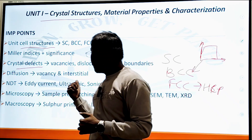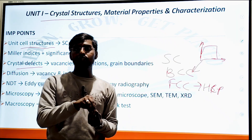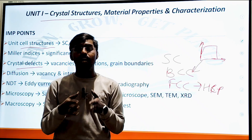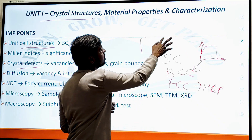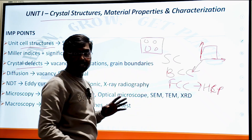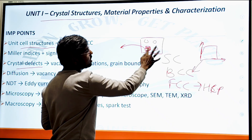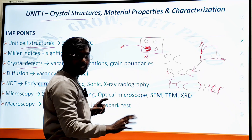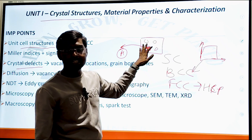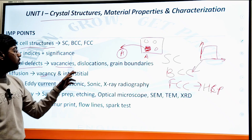The third topic is crystal defects. These include vacancies, dislocation, and grain boundary. Vacancies can be understood by analogy: if a student leaves a classroom, a vacancy is created in that seat. Similarly, in a material's crystal structure, if one atom leaves its position, a vacancy is created at that location. This is called a vacancy defect.